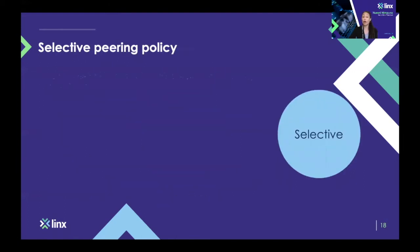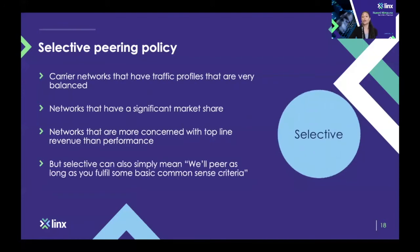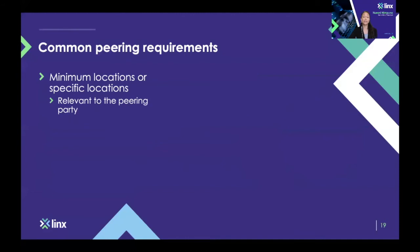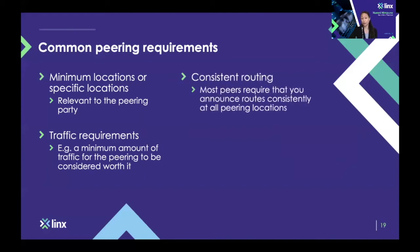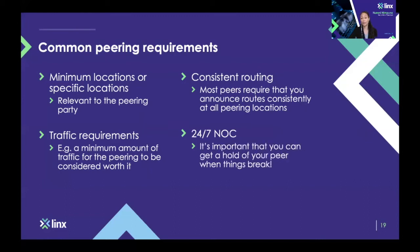Selective peering policies are very common. That can be, for example, a carrier network with a very balanced traffic profile, a network with significant market share that is more concerned with top line revenue than performance. Selective can also simply mean that you will peer if certain basic minimum requirements are met — such as a minimum number of locations, a minimum amount of traffic, consistent routing across peering locations, and technical requirements like 24/7 NOC support to ensure quality network management.